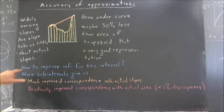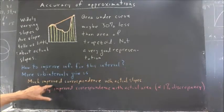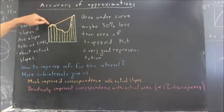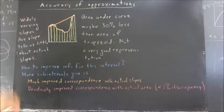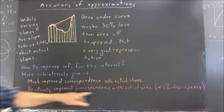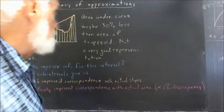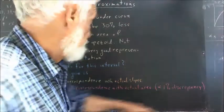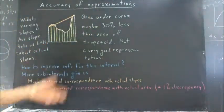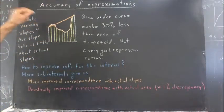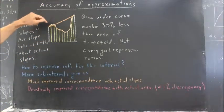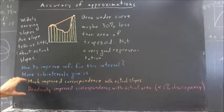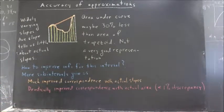Okay, so I'll make the statement that more subintervals give us much improved correspondence with the actual slopes, although there are places where we're off, like on this second little subinterval here, and drastically improved correspondence with actual areas. I think there's overall less than a 1% discrepancy in the areas. There's quite a bit more than a 1% discrepancy at some points between the slopes and the average slopes. But we still have much improved here and drastic improvement here.